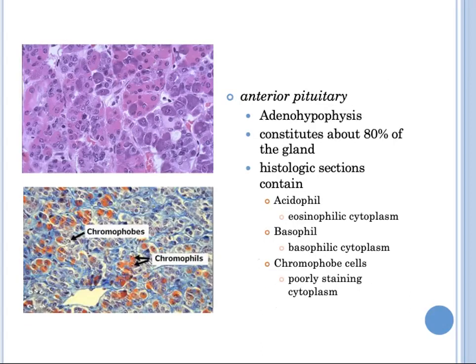The anterior pituitary, or adenohypophysis, constitutes about 80% of the gland and produces tropic hormones that stimulate the production of hormones from the thyroid, adrenal, and other glands. It is composed of epithelial cells derived embryologically from the developing oral cavity. On routine histologic sections, the pituitary contains acidophils with eosinophilic cytoplasm, basophils with basophilic cytoplasm, and chromophobe cells with poorly staining cytoplasm.